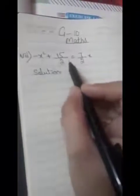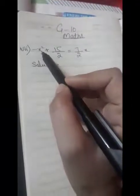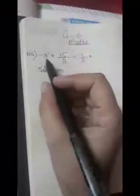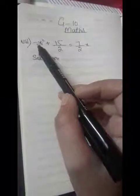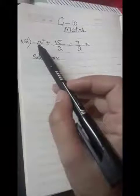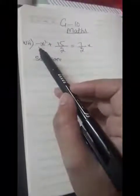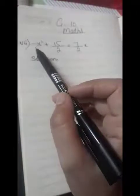The coefficient of x² should not be negative. Since there's a minus sign with x², we need to rearrange by changing the signs on both sides.